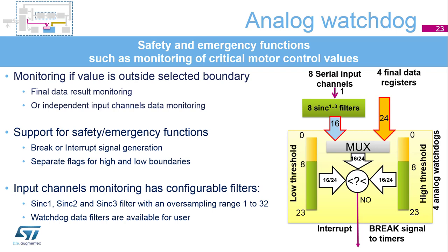The analog watchdog can monitor two types of data. The first type is standard output, as with the internal ADC. The second type can come from a serial transceiver through a dedicated configurable filter, allowing faster signal monitoring when required speed and resolution are set by the filter parameters. Each watchdog sinc filter order is configurable from 1 to 3, and filter oversampling ratio ranges from 1 to 32. The data from these watchdog filters can also be read by user firmware.